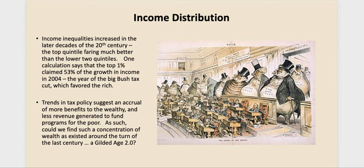What about income distribution? Income inequalities have increased greatly in the latter decades of the 20th century in the wake of the Reagan Revolution and cutbacks in social services. The top 20% are faring much better than the lower 40%. One calculation found that the top 1% claimed 53% of the growth in income in 2004 — the same year the Bush-era tax cuts were implemented — so they were already doing well and the tax cuts favored the rich even more.